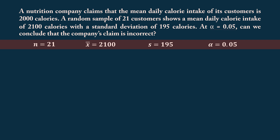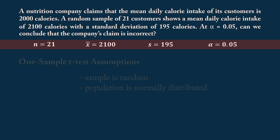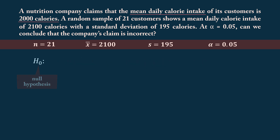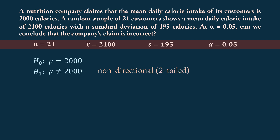To conduct a one-sample t-test, we need to assume that the sample is random and representative of the population, and that the population of daily calorie intakes is normally distributed. Now let's state our hypotheses. Since we're testing the claim that the mean daily calorie intake is 2,000, the null hypothesis is that the population mean mu equals 2,000 calories. Since we want to test if that claim is incorrect, the alternative hypothesis H₁ is that the population mean is not equal to 2,000 calories. This is a non-directional or two-tailed test, since 'not equal' means the mean could be less than or greater than 2,000.